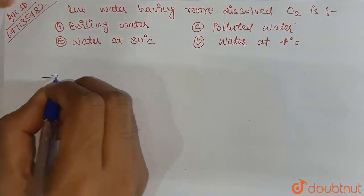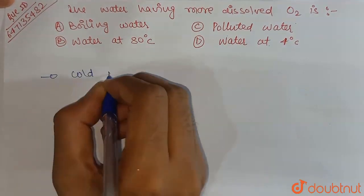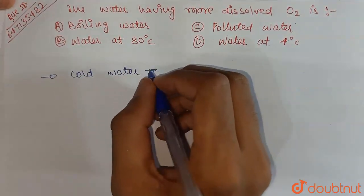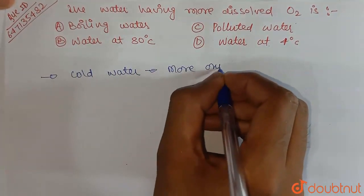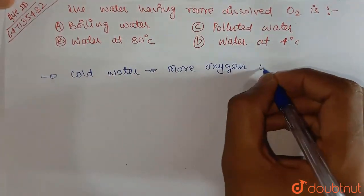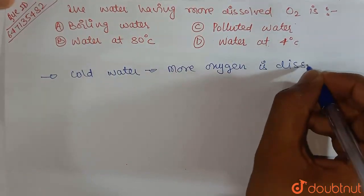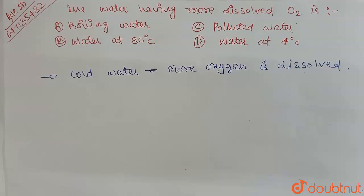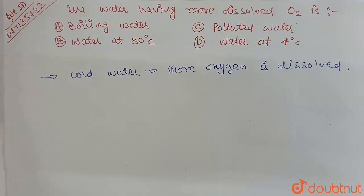So basically, cold water has more dissolved oxygen. More oxygen is dissolved. We can say that oxygen is a cold gas. Cold water has more dissolved. As compared to warm water, cold water has more dissolved oxygen.